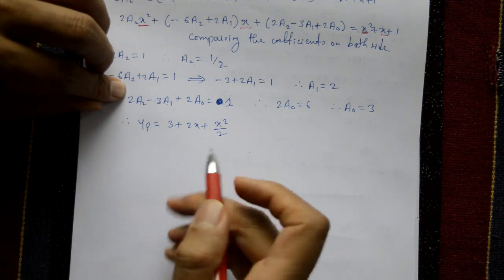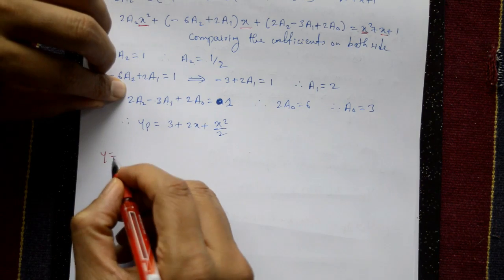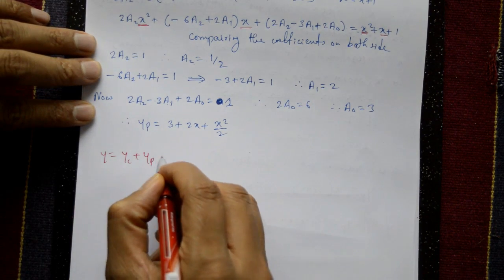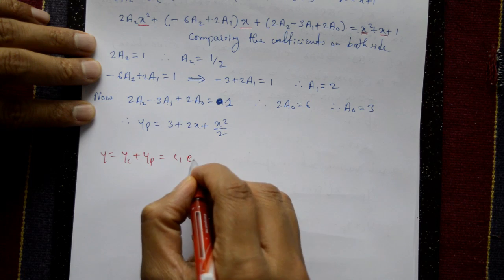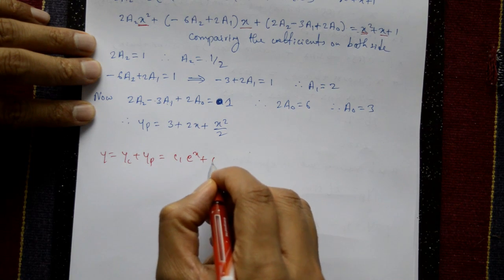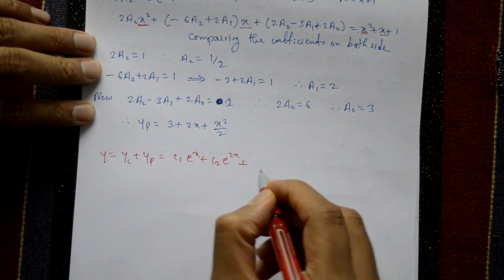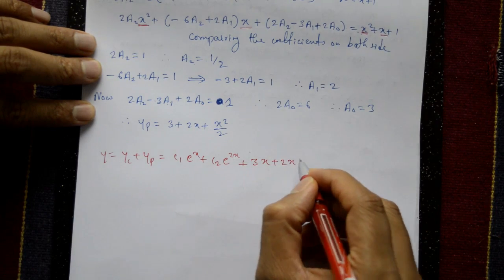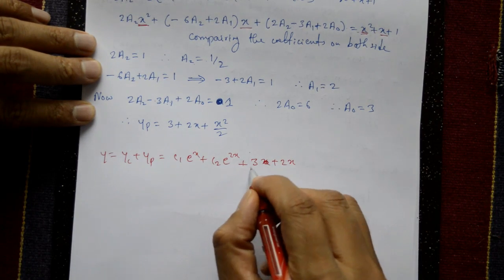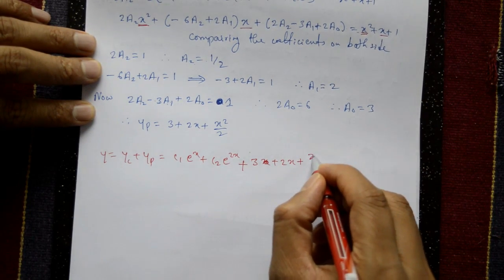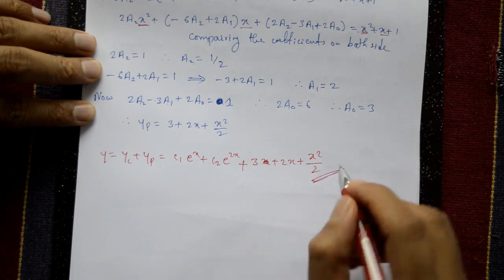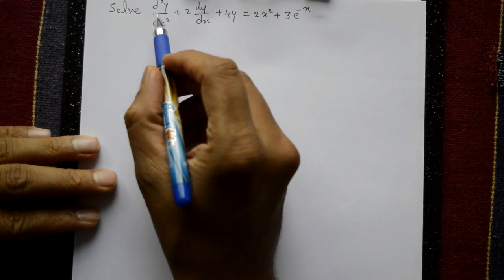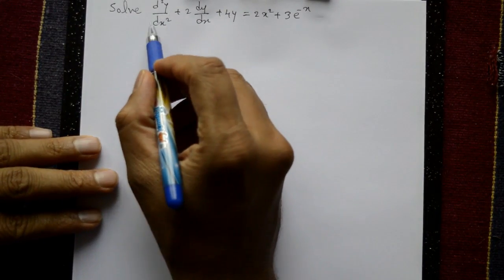The complete solution is the complementary function plus the particular integral: y = c₁eˣ + c₂e²ˣ + 3 + 2x + x²/2.